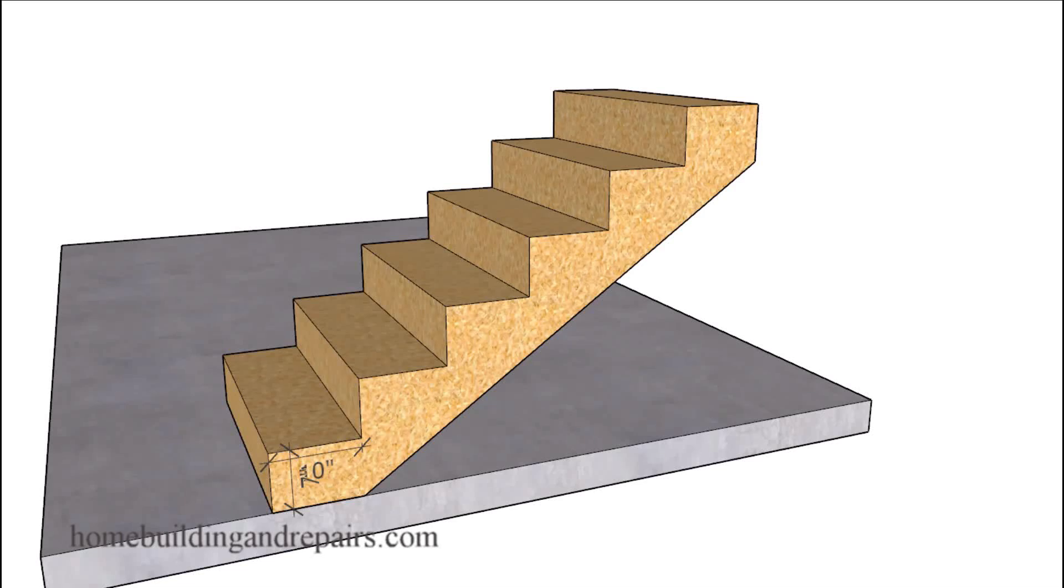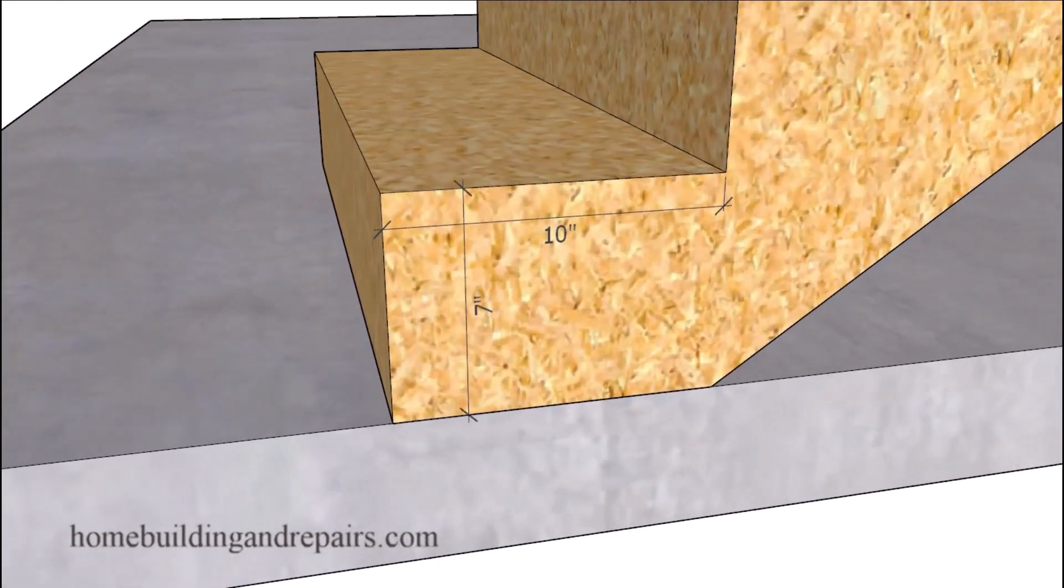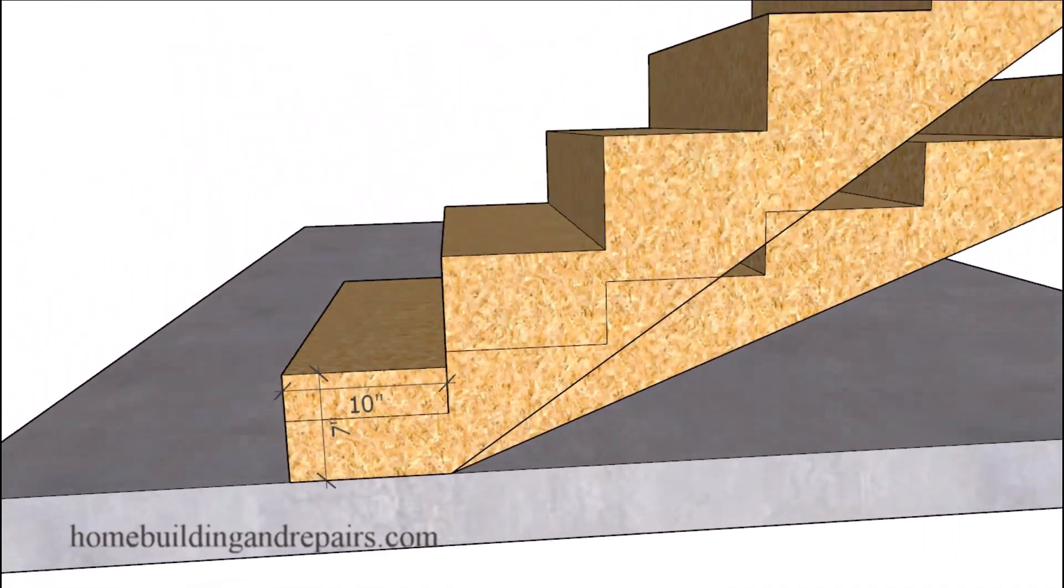In this video I will provide you with four ways you can change the angle of a stairway. So we're going to start with a stairway that has a 7 inch riser and a 10 inch wide tread. 7 inch high riser and a stair tread depth of 10 inches.